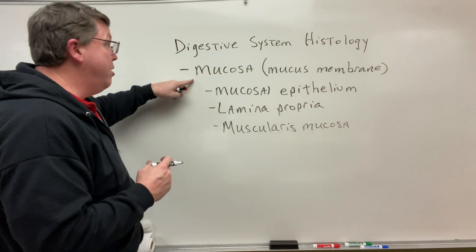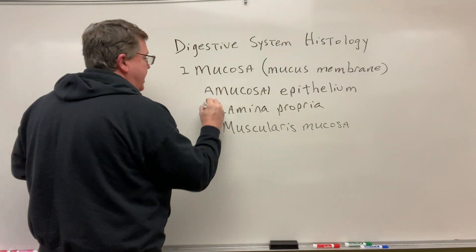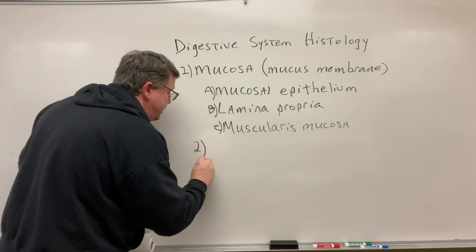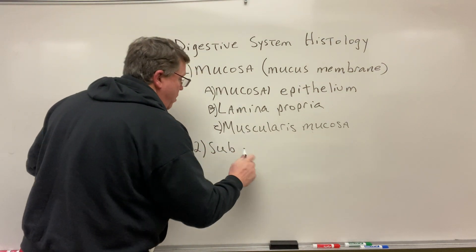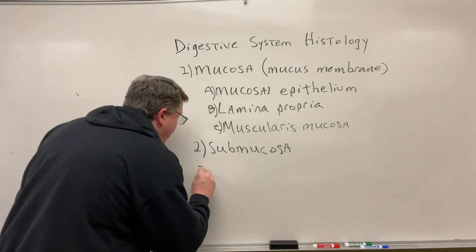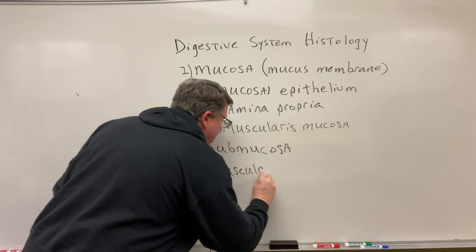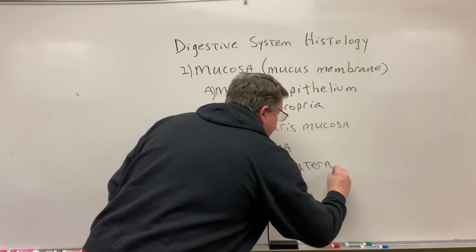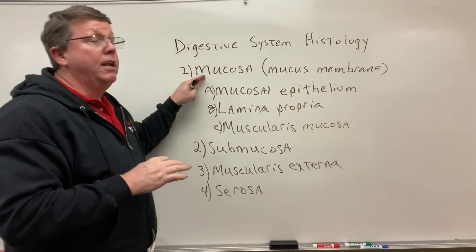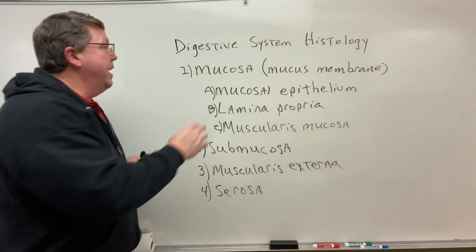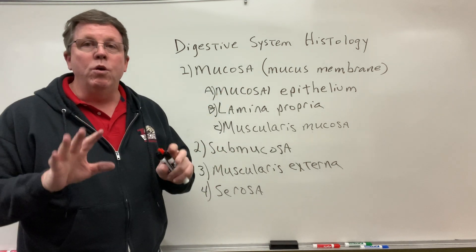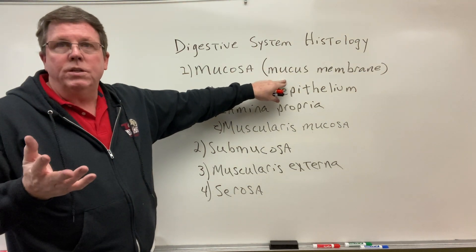In the digestive system, underneath the mucosa — that's layer one — we have the submucosa, and I will make a different video on that. After that we have another muscular layer called the muscularis externa, and then the outermost layer called the serosa. The mucosa is the innermost layer. If you open your mouth and look, you will see the mucous membrane — a part of the mucous membrane of the digestive system.